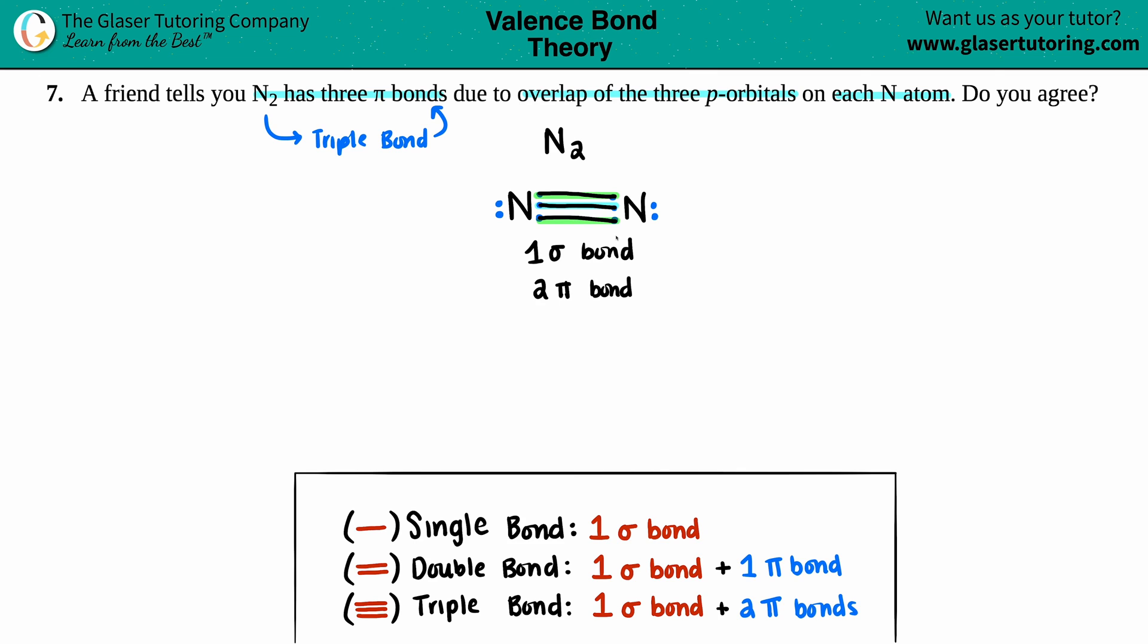So for any triple bond you have a sigma which is right in line with the nuclei and then the two pi bonds. So my friend said that it had three pi bonds, and would I have to agree?